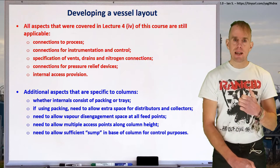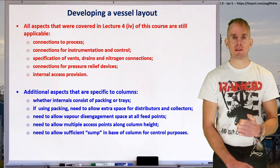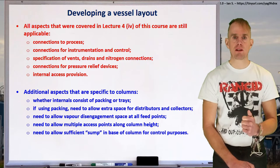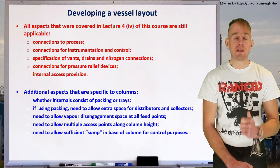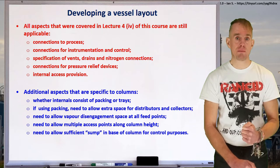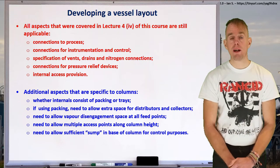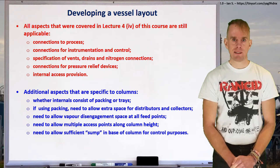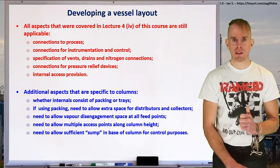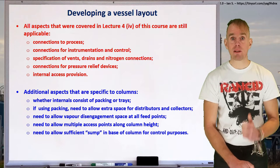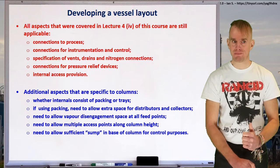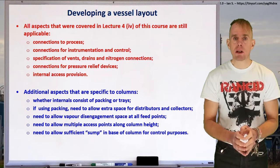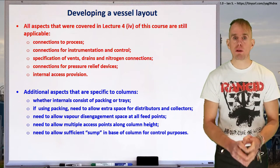Columns will require inspection during shutdown, much as any vessel will. But if you are the person inspecting the column and you need to access a tray that's blown its valves out three stages below the condenser, and the only access point you've got is two stages above the reboiler with 50 stages in the column — do you really want to climb through the entire column? We're also going to talk about the column sump and how much liquid we should leave in there for control purposes.